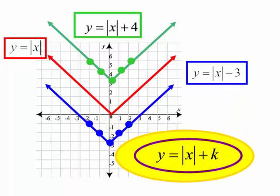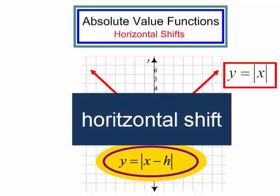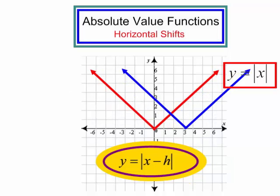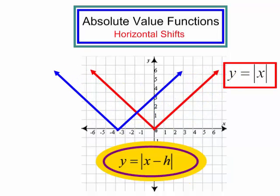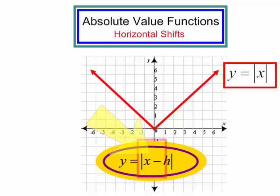Let's work on horizontal shifts. Here is my parent function y equals the absolute value of x. If I have y equals the absolute value of x minus h, that is a horizontal shift and my function will move right or left. I do have to be careful — notice in the formula it is x minus h. Let's graph some of these.